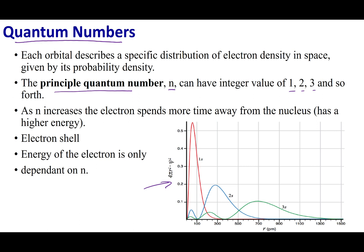Looking at this graph, the x-axis shows distance away from the nucleus in picometers, and the y-axis shows the probability to find the electron. For n equals 1, this is the most probable location to find the electron. As I increase n — going to n equals 2 — an electron with that principal quantum number is more probable to be found further away than n equals 1. This holds true for n equals 3 as well.